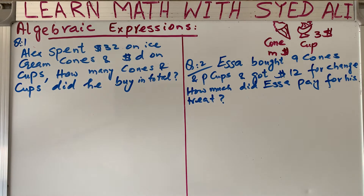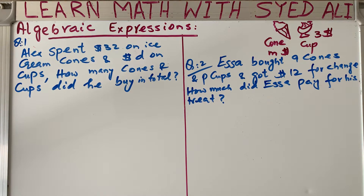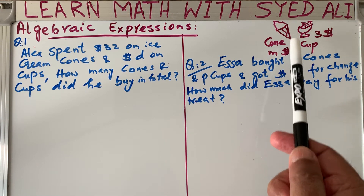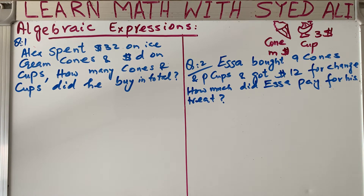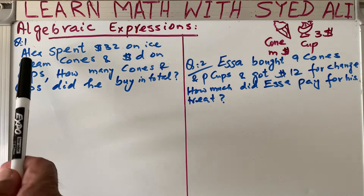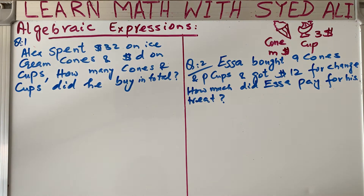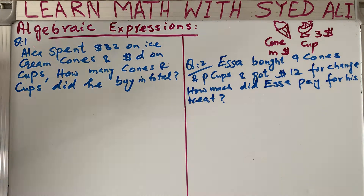Welcome to Learn Math with Sayyad Ali. Continuing our topic on algebraic expressions, we have cones which have a price of m dollars and cups which have a price of three dollars. We have some algebraic statements about buying cones and cups of ice cream. We need to understand each statement and write down the expression that the question is requiring.